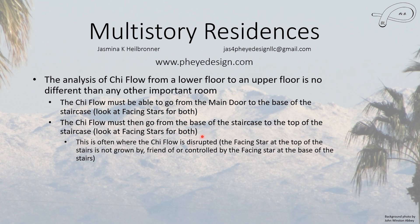This is the point where, in almost everyone I've looked at, the chi flow breaks down. The chi doesn't flow upstairs — it actually flows downstairs. You would know that chi is getting upstairs if the facing star at the top of the stairs is either grown by, a friend of, or controlled by the facing star at the bottom. If it goes the other way — the facing star at the top grows, befriends, or controls the one at the bottom — that's what I've seen a lot.